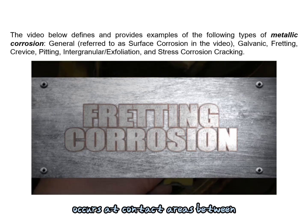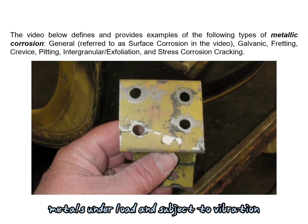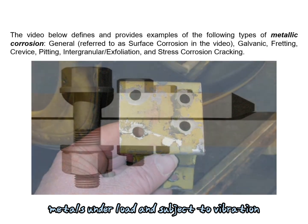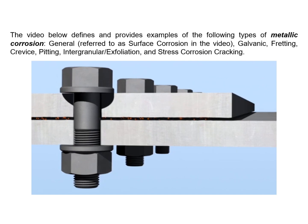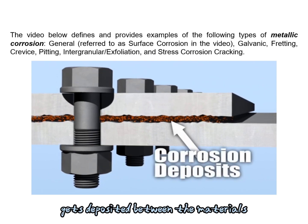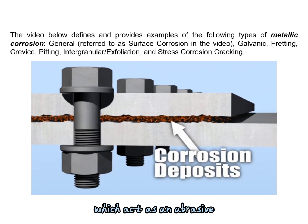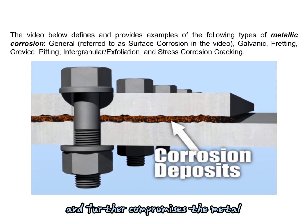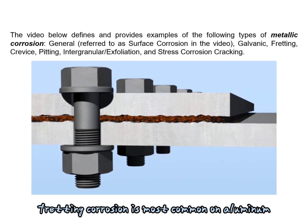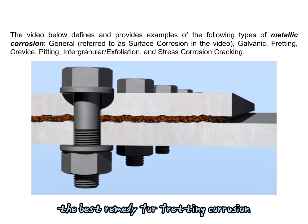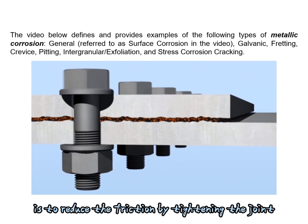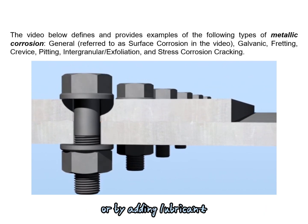Fretting corrosion occurs at contact areas between metals under load and subject to vibration. The vibration and load does not have to be significant for fretting corrosion to occur. The corrosion product gets deposited between the materials, which acts as an abrasive and further compromises the metal. Fretting corrosion is most common on aluminum, stainless steel, and titanium alloys. The best remedy is to reduce friction by tightening the joint or by adding lubricant.